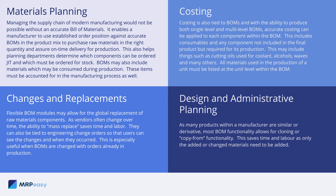Flexible bill of materials modules may allow for the global replacement of raw materials and components. As vendors often change over time, the ability to mass replace saves time and labor. They can also be tied to engineering change orders so that users can see the changes and when they occur. This is especially useful when bill of materials are changed with orders already in production.